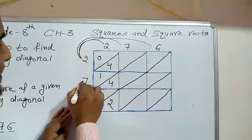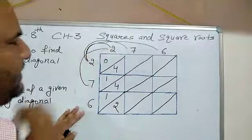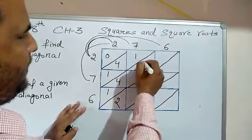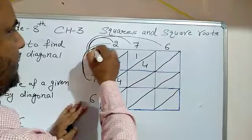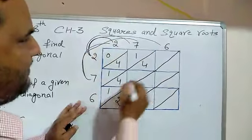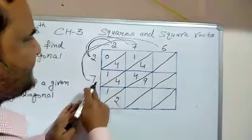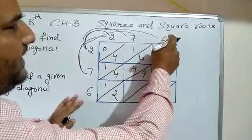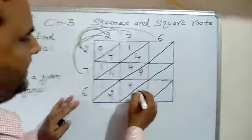Next is 7. First, 7 into 2: we get 14. Then 7 into 7: we get 49. Then 7 into 6: 7 sixes are 42. I am writing these values in the corresponding cells.